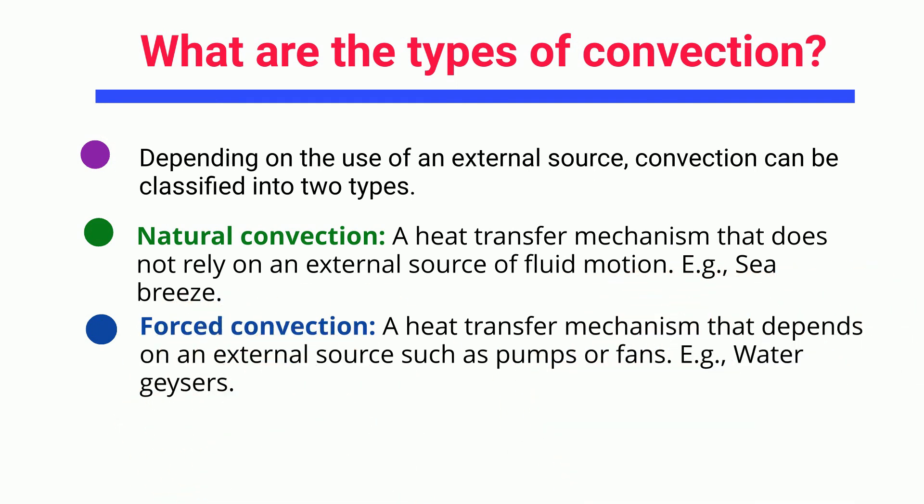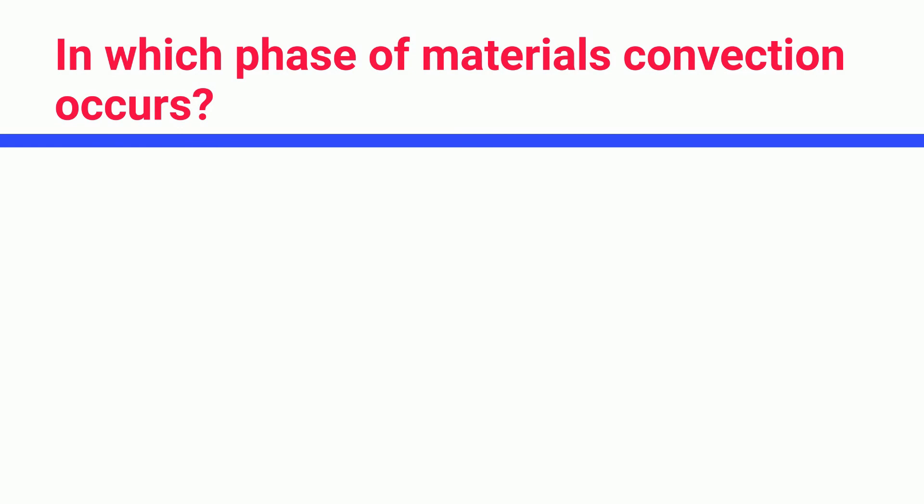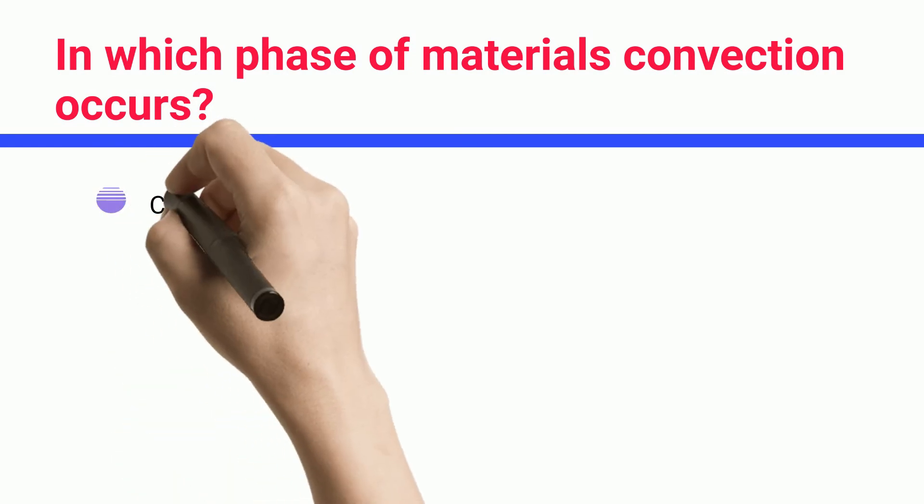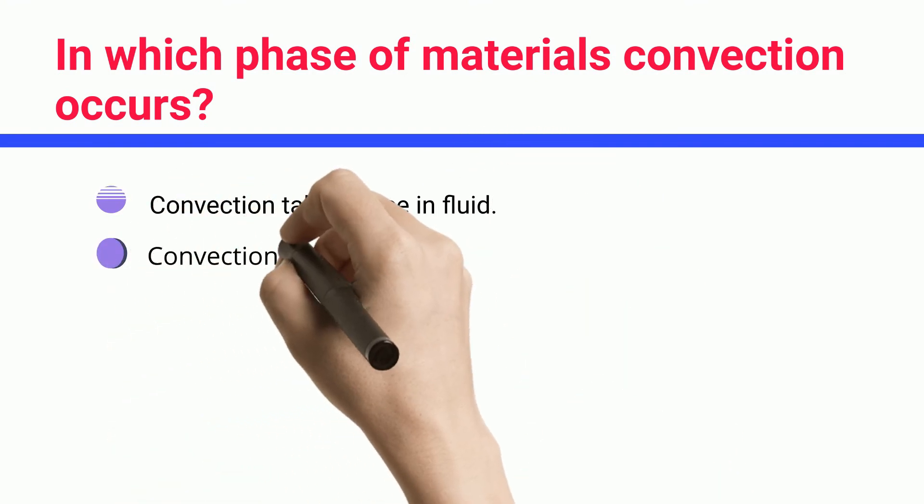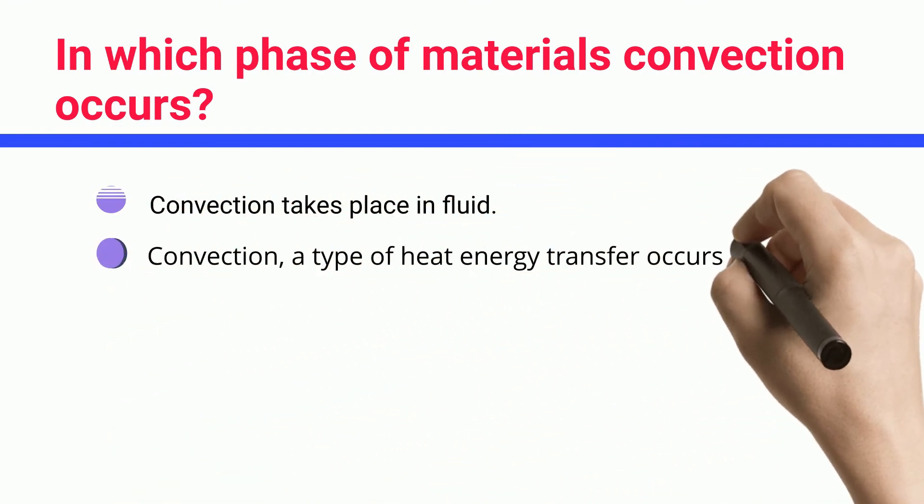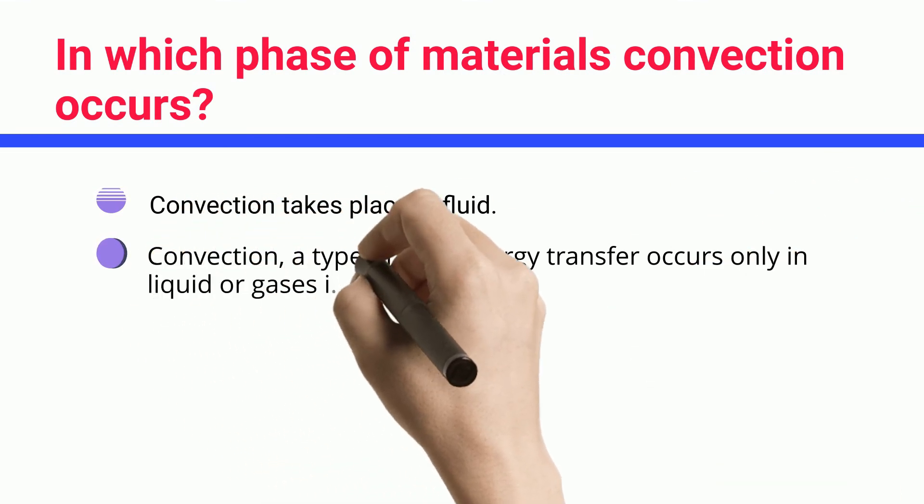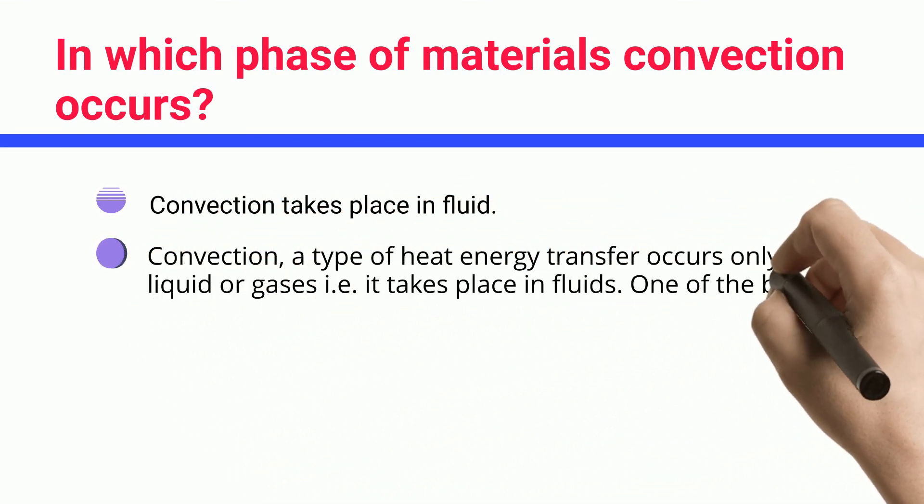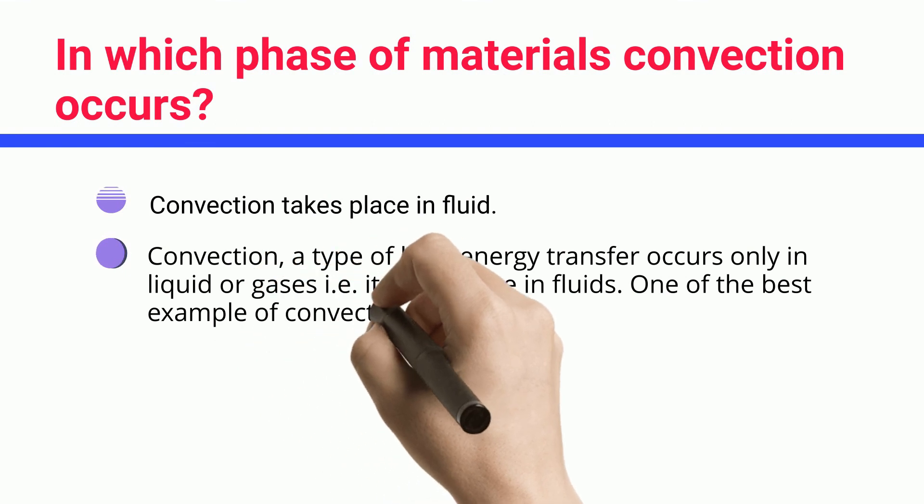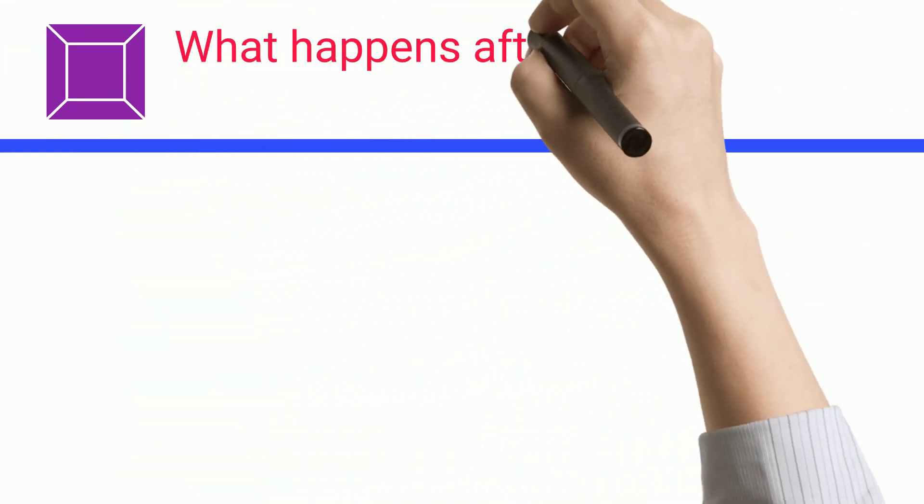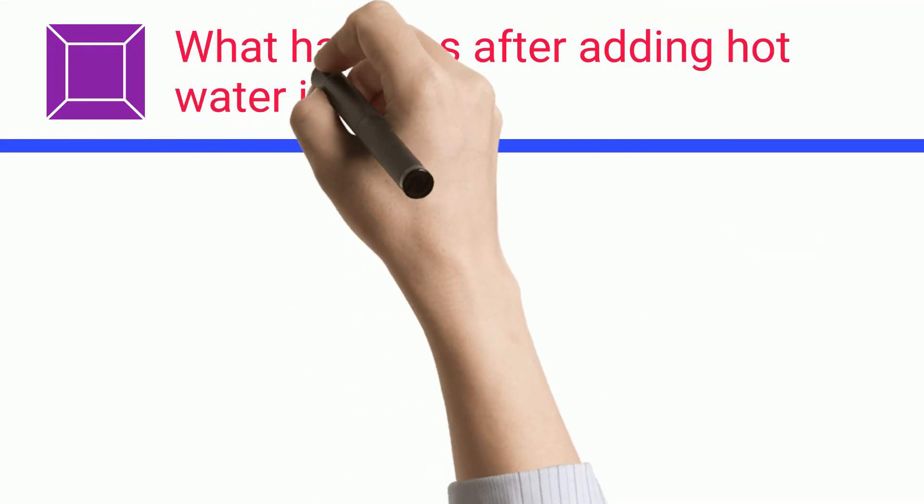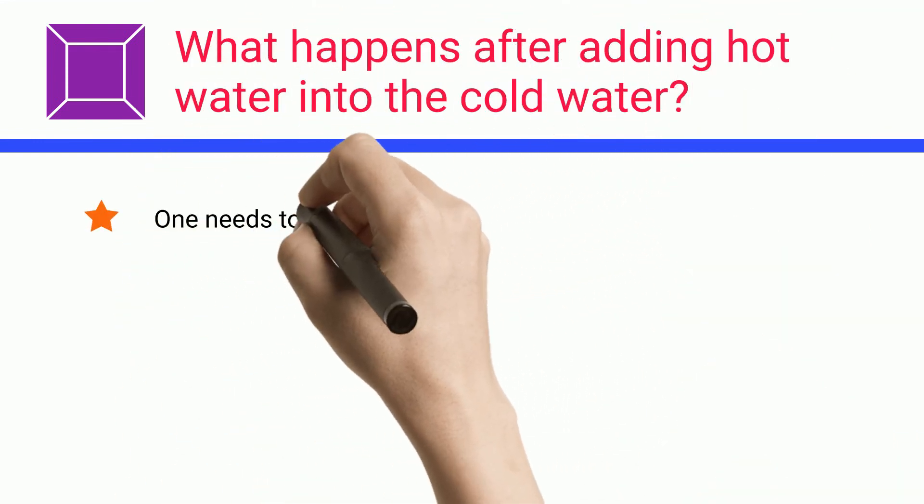In which phase of materials does convection occur? Convection takes place in fluids. Convection, a type of heat energy transfer, occurs only in liquids or gases. One of the best examples of convection is rainfall.